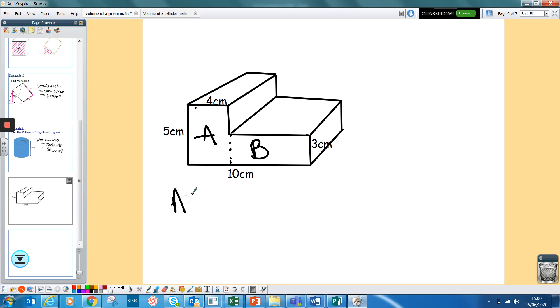So area A would be, this length times width, 4 times 5, is 20. Area B will be 3 times by how long this is. I don't know how long that is at the minute, but I know this is 10. This is 4 up to there. So that there must be 6. So area B would be 6 times 3, which is 18, giving me a total area of 38.